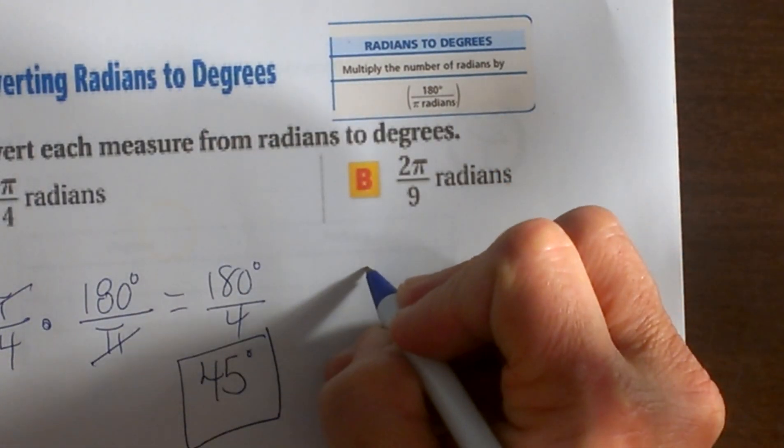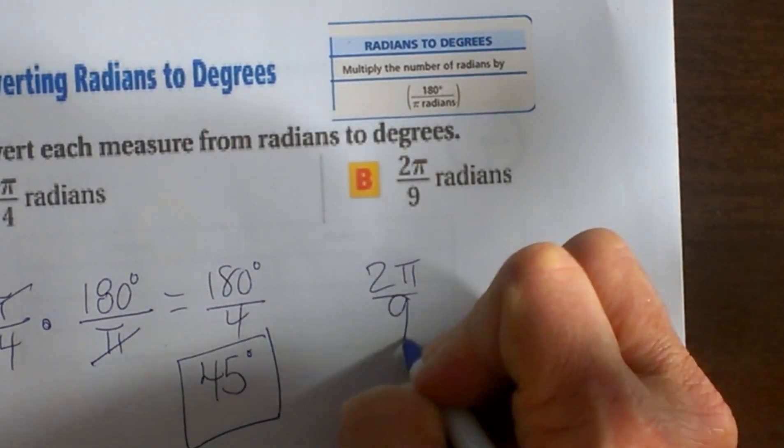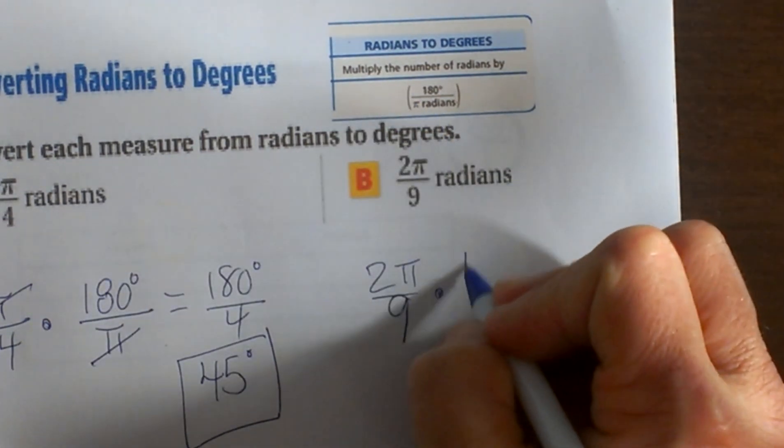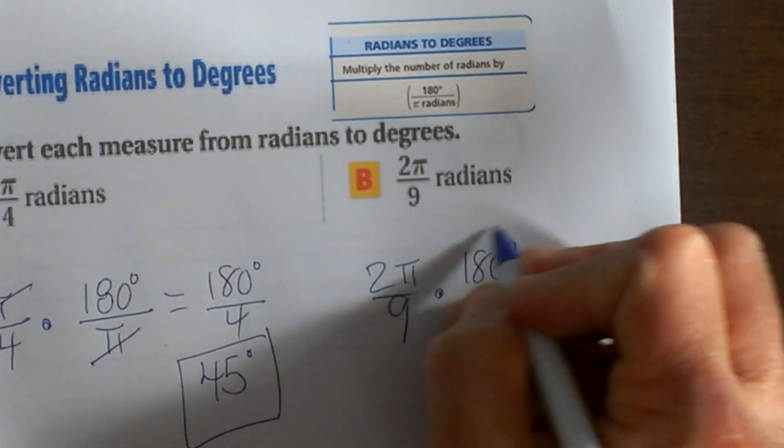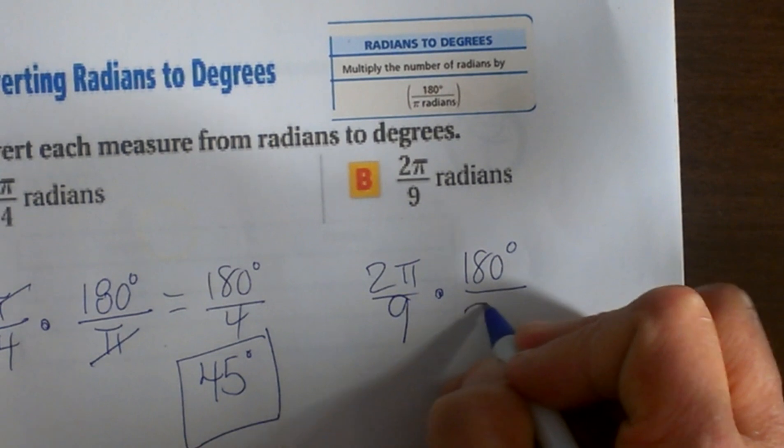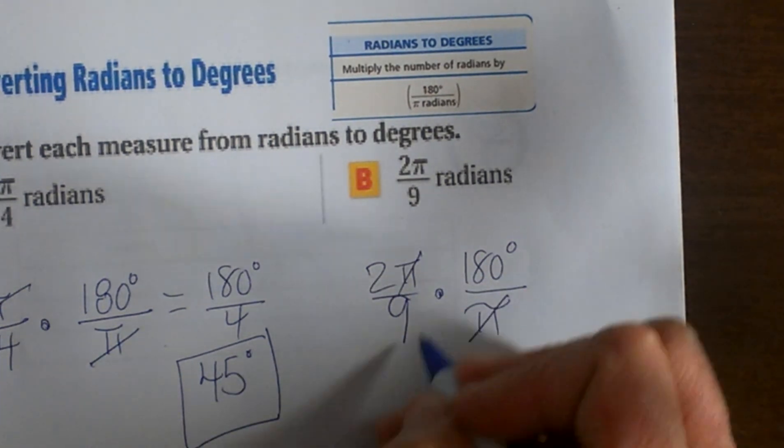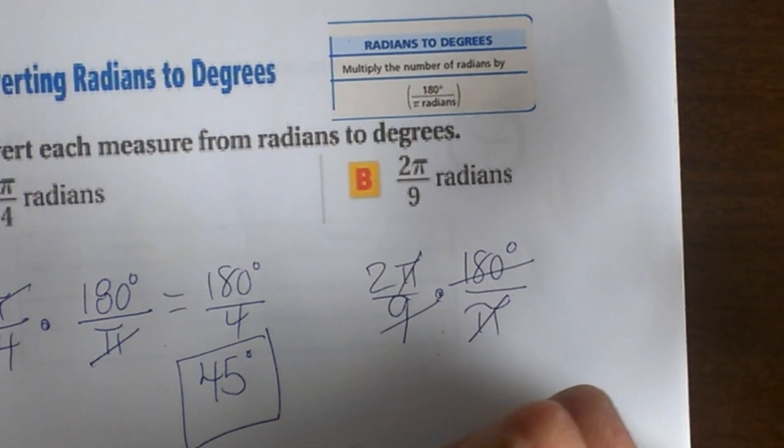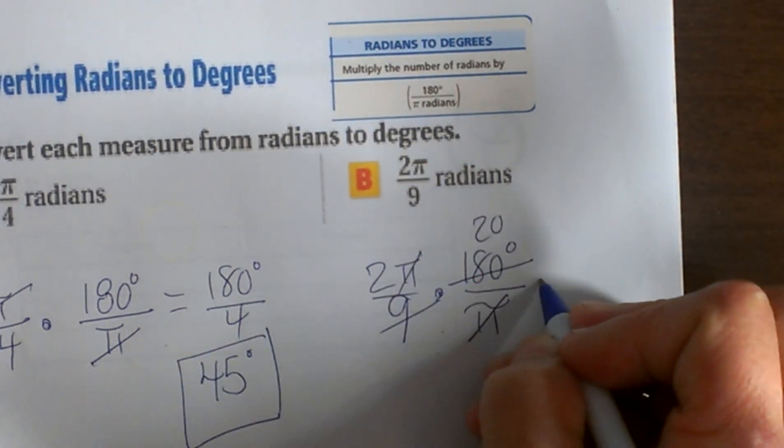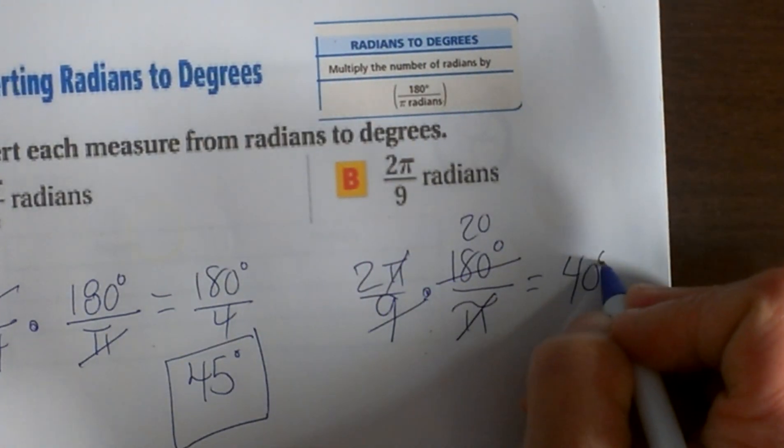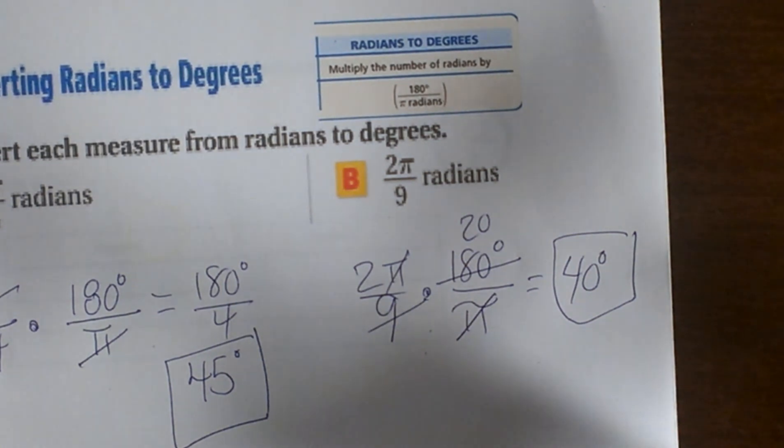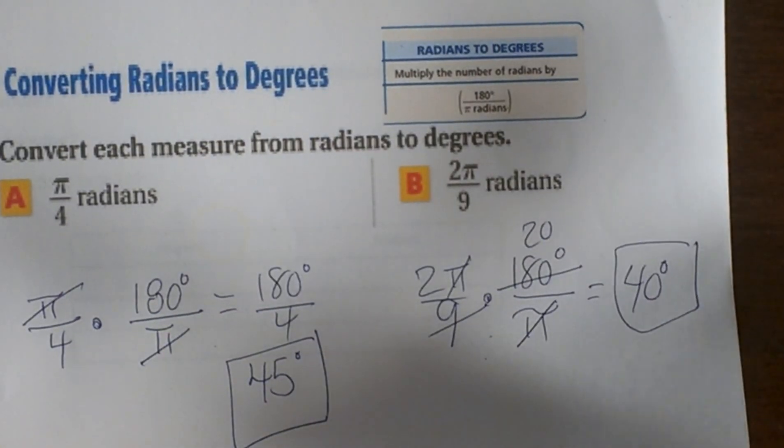Here's one more: 2π/9 times 180 over π. The πs cancel, 9 goes into 180 twenty times, so that gives us 40 degrees. Hopefully you've seen a couple conversions to make it easier to go back and forth.